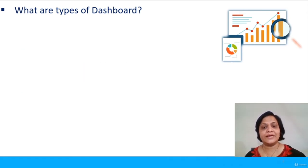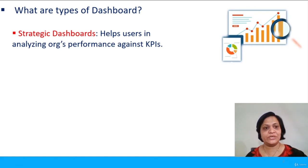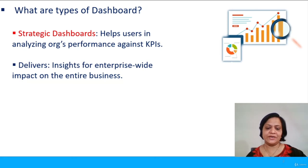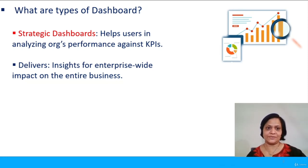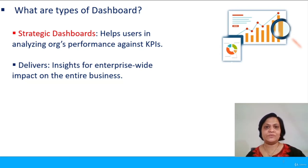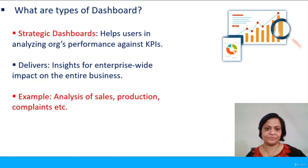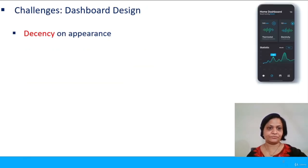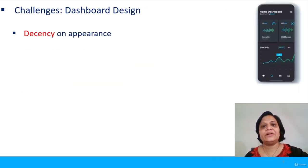Another very important type of dashboard is the strategic dashboard. It helps top management persons take decisions about the organization by monitoring key performance indicators. Strategic dashboards deliver insights about parameters which have enterprise-wide impact on businesses, providing a higher-level picture. Examples include analysis of sales, production, complaints, and so on, which have direct impact on the performance of the organization.